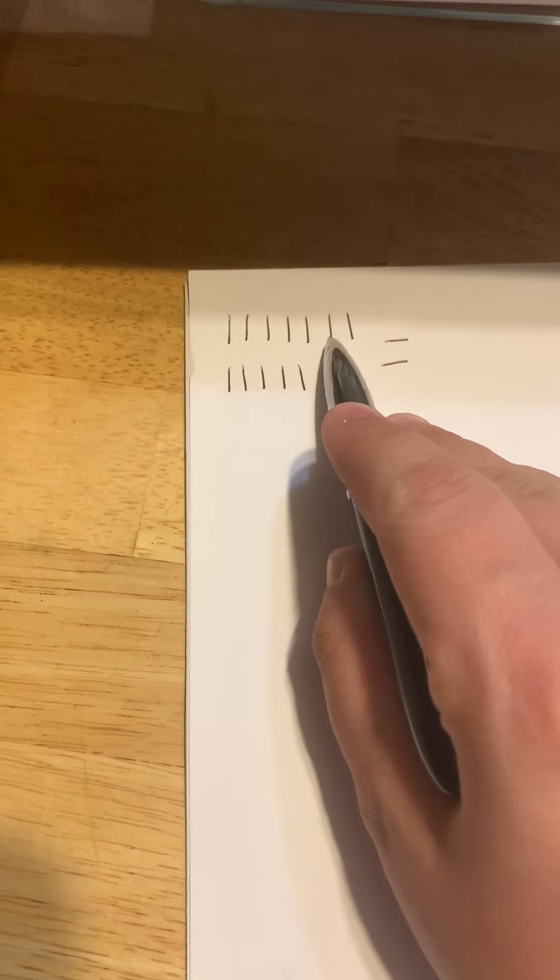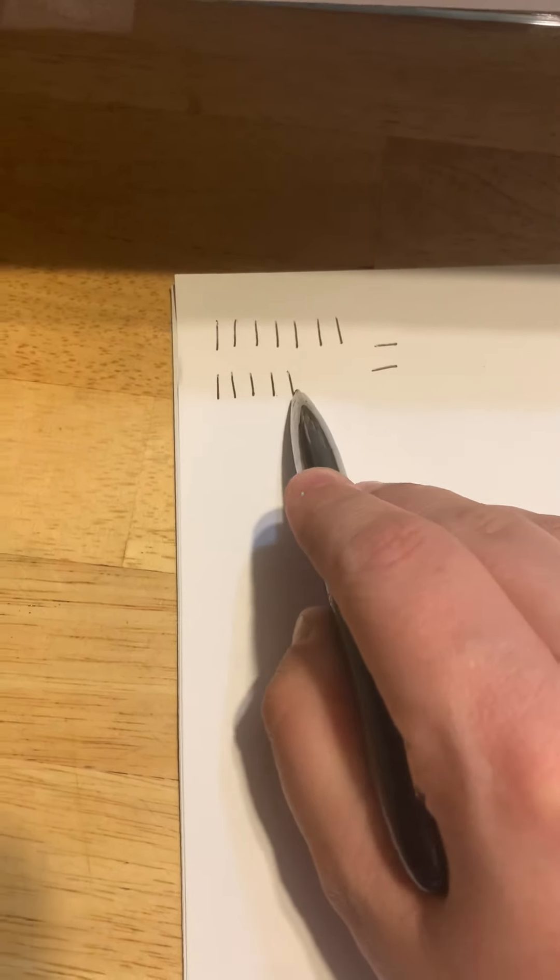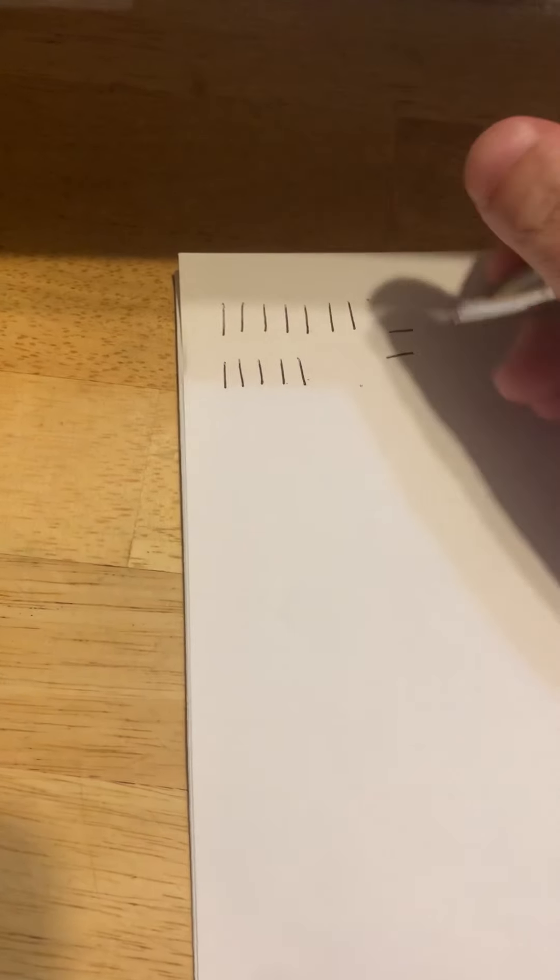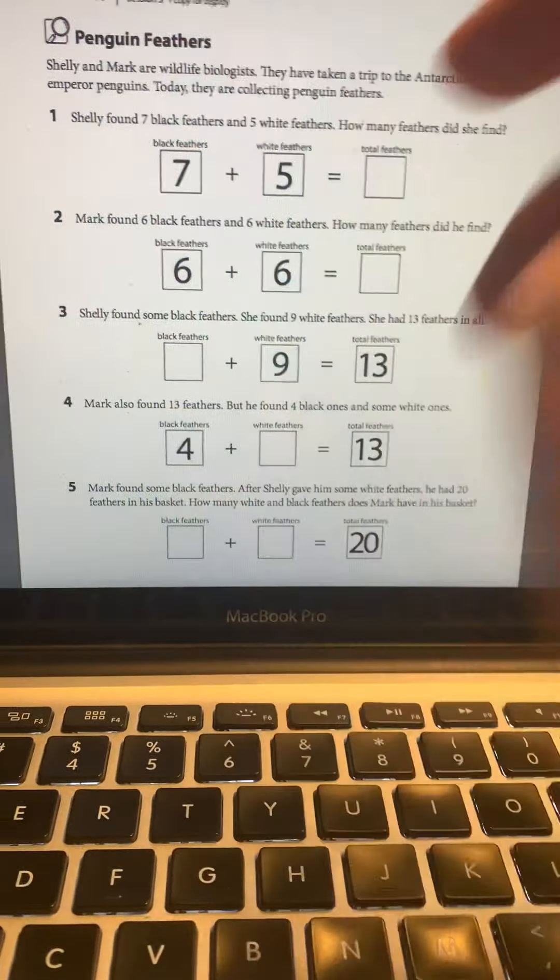Then you can add them up. One, two, three, four, five, six, seven, eight, nine, 10, 11, 12. So seven plus five is 12. So you would put that right there.